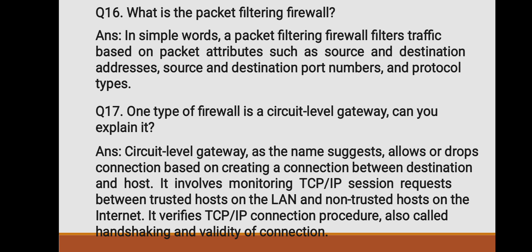What is a packet filtering firewall? In simple words, a packet filtering firewall filters traffic based on packet attributes such as source and destination addresses, source and destination port numbers, and protocol types. One type of firewall is a circuit level gateway. Circuit level gateway, as the name suggests, allows or drops the connection based on creating a connection between the destination and the host. It involves monitoring TCP/IP session requests between trusted hosts on the LAN and non-trusted hosts on the internet. It verifies the TCP/IP connection procedure, also called handshaking, and the validity of the connection.